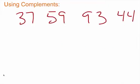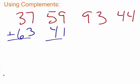So let's look at the other complements. Take a minute to try to figure these out. 37 plus what will be 100? 59 plus what will be 100? 93 plus what will be 100? And 44 plus what will be 100? Time's up. So for 37 we should have 63. And 59, we have 41. 93 — that's an easy one — just 7. And 44? We have 56.